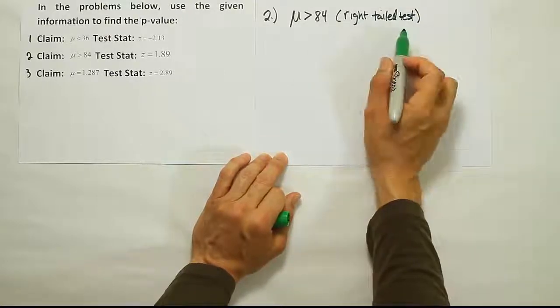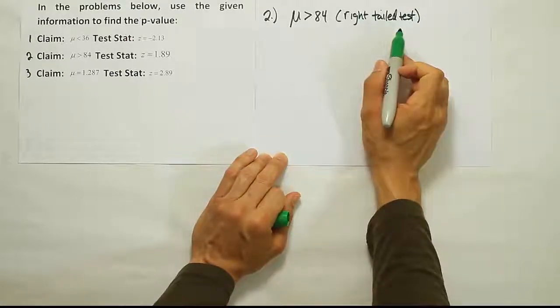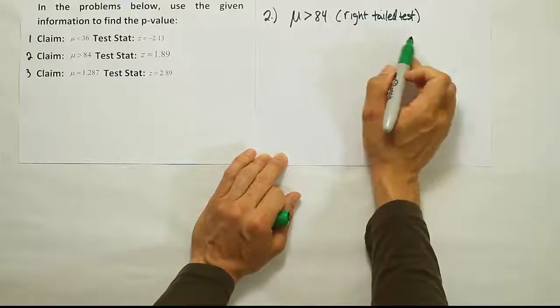And why that's important is because if we're dealing with a right-tailed test, then in order to find the p-value, we must find the area to the right of the test statistic.